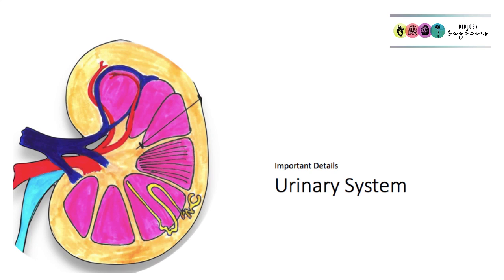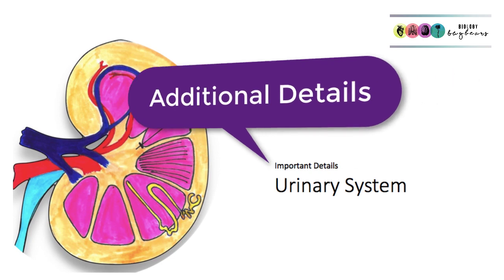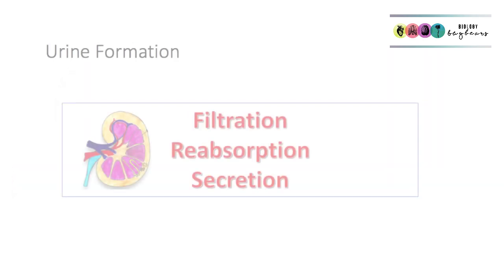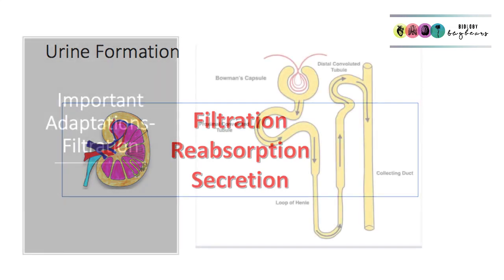This is an additional video on the urinary system, covering particular details that might crop up in higher level questions. You know now that urine formation is a three-stage process: there's filtration, reabsorption and secretion. By now you should be able to state where exactly in the nephron each stage takes place and where in the kidney each stage takes place.